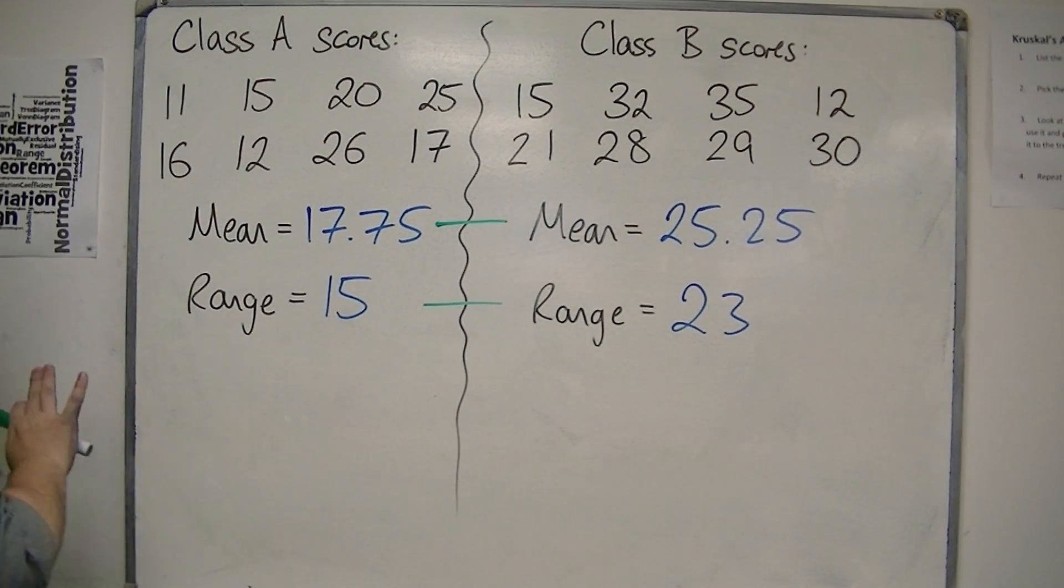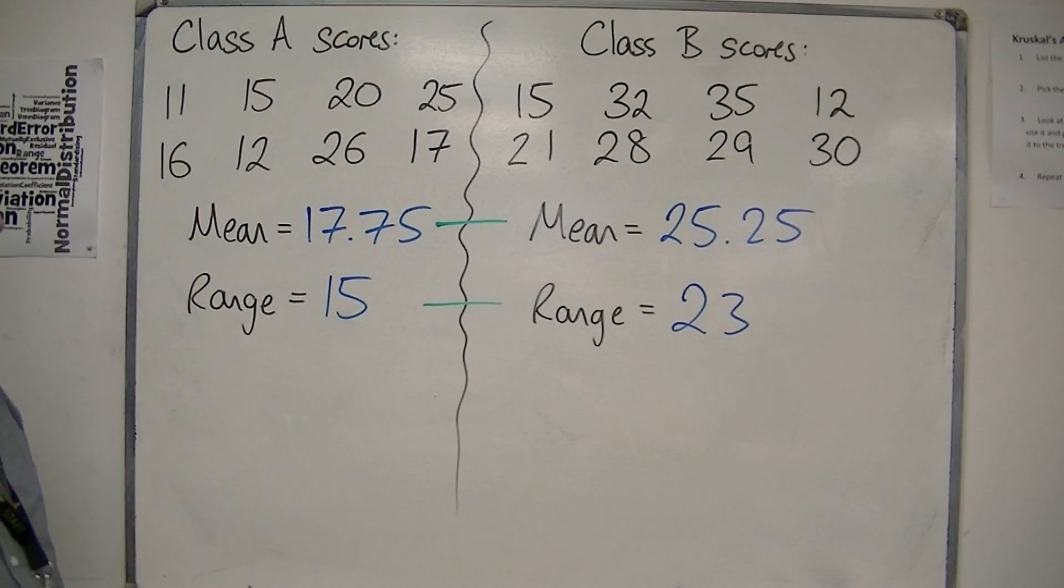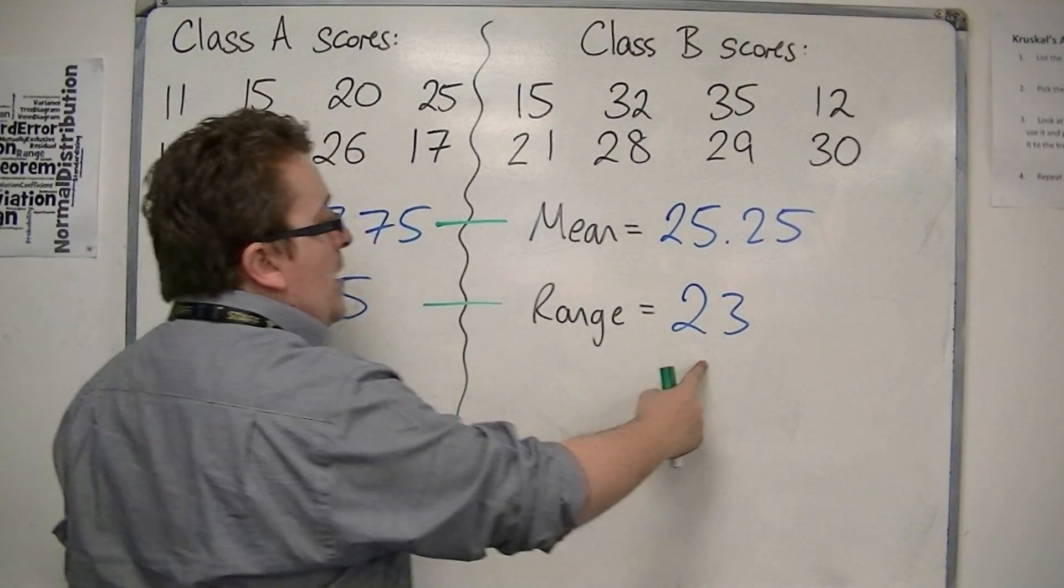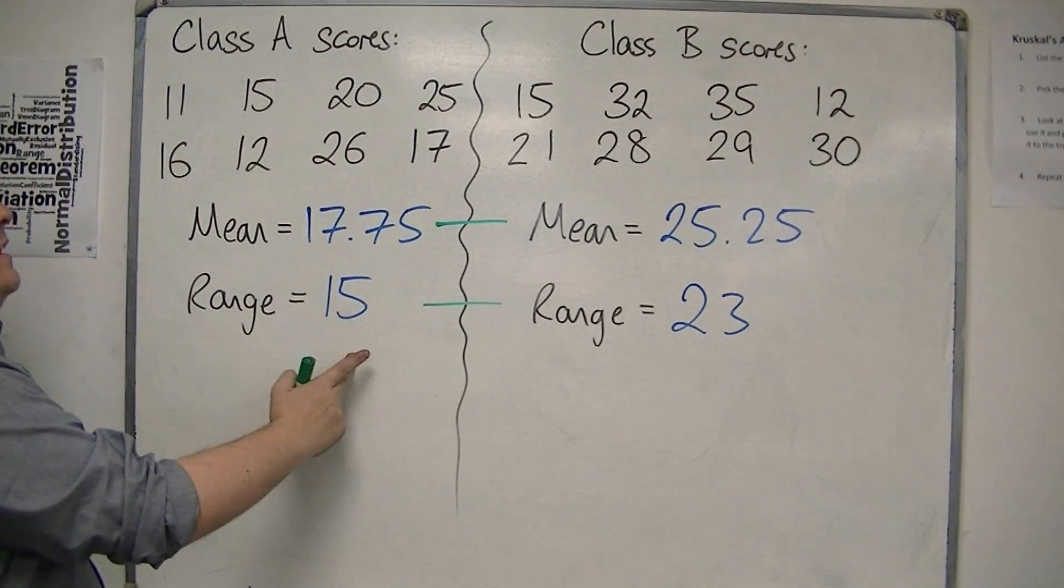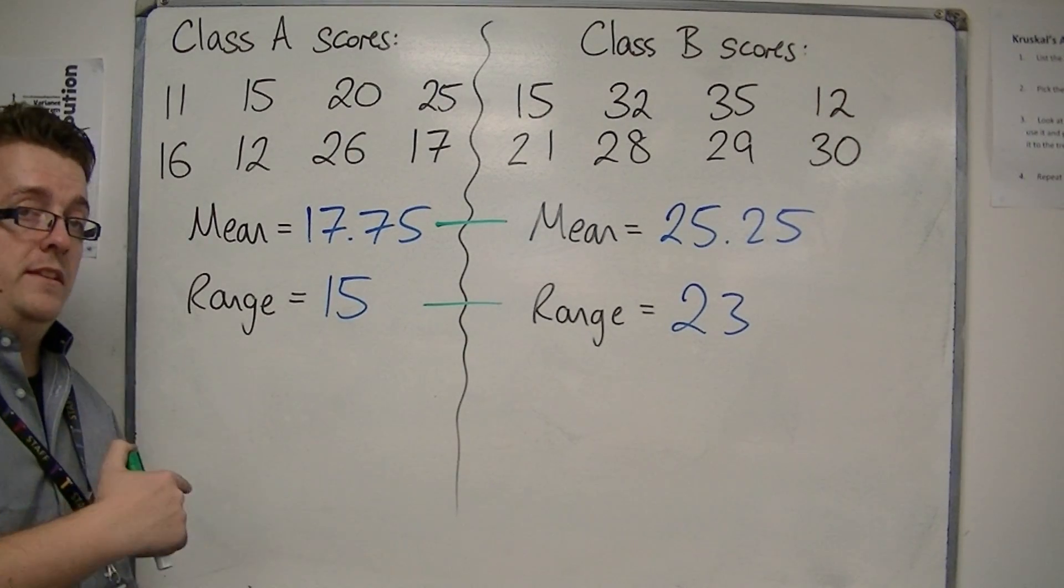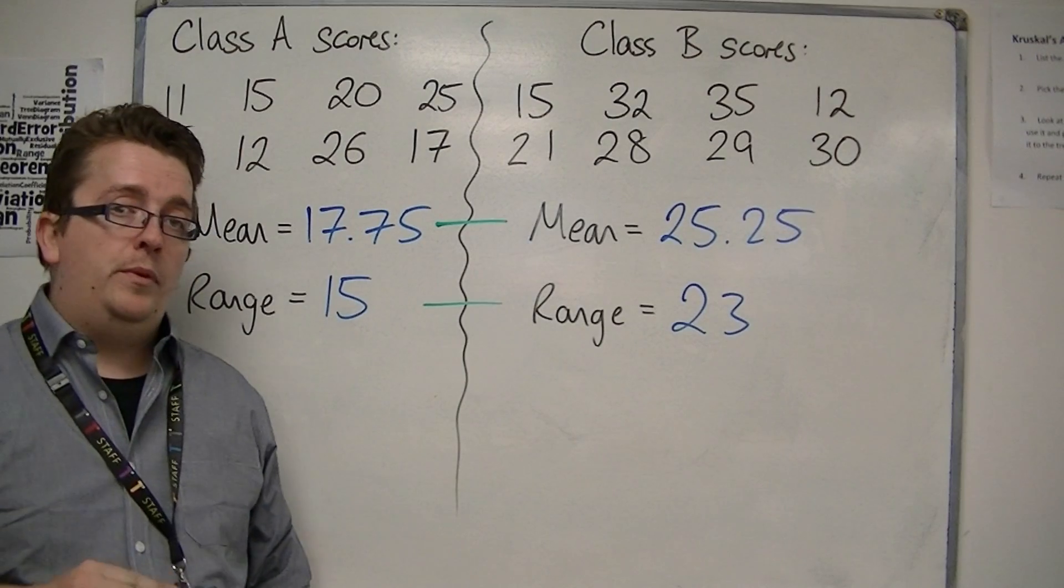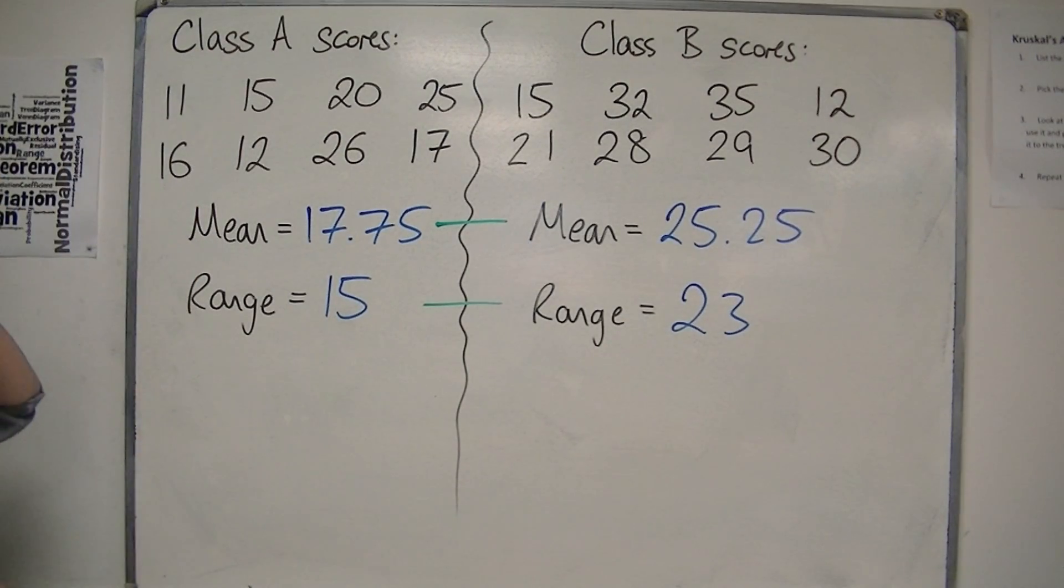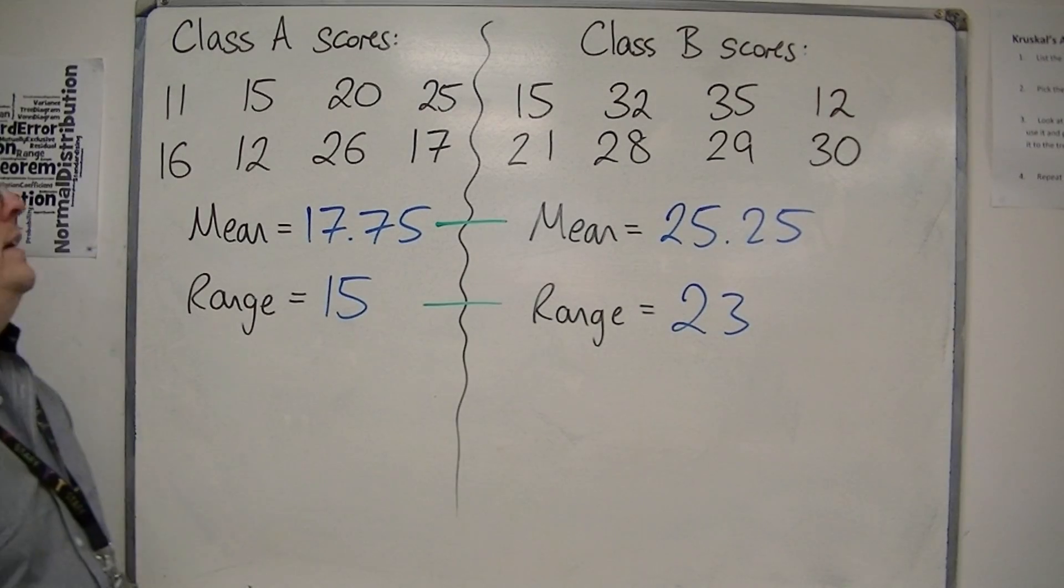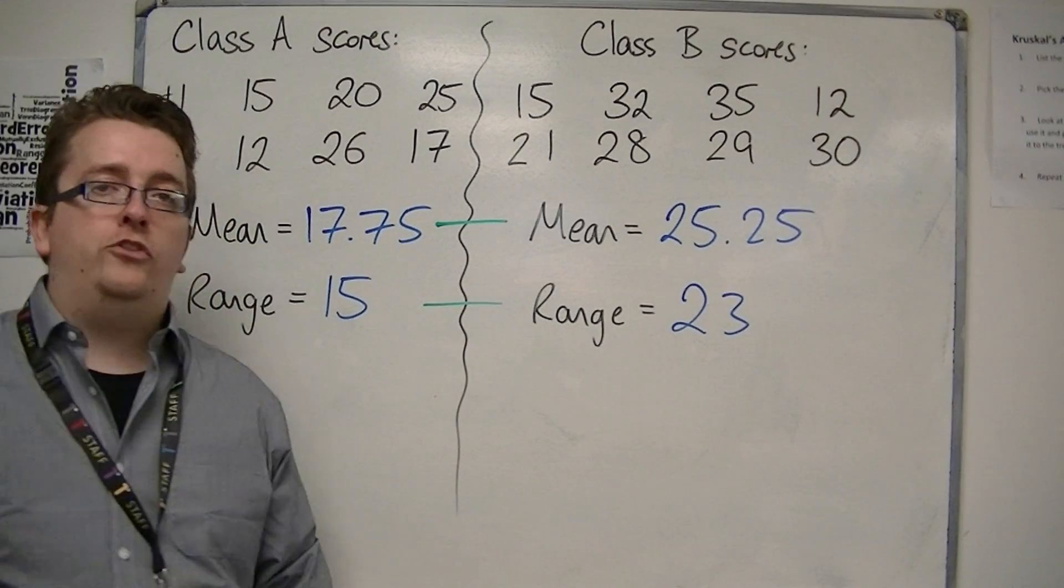When we compare the range, remember the range tells you how spread out the data is. So Class B's data is spread out wider than Class A's, which means that Class A's data is more consistent. Class A are more consistent, there is a narrower gap. So Class B's data is more spread out, so there is a larger difference between the weakest student and the strongest student.